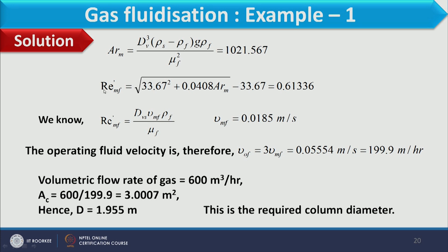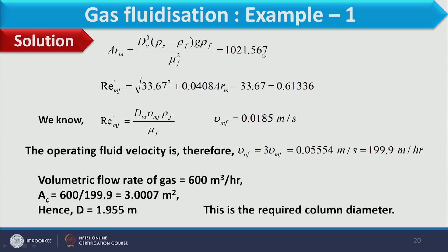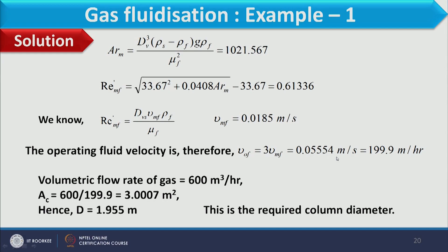Using the expression derived in the second lecture of this week for minimum fluidizing velocity of different shapes, and substituting the Archimedes number of 1021.567, the Reynolds number at minimum fluidizing conditions is 0.61336. From this, the minimum fluidization velocity U_MF = 0.0185 m/s. Since the operating velocity is 3 times U_MF, the operating velocity = 3 × 0.0185 = 0.05554 m/s (or 199.9 m/hour).